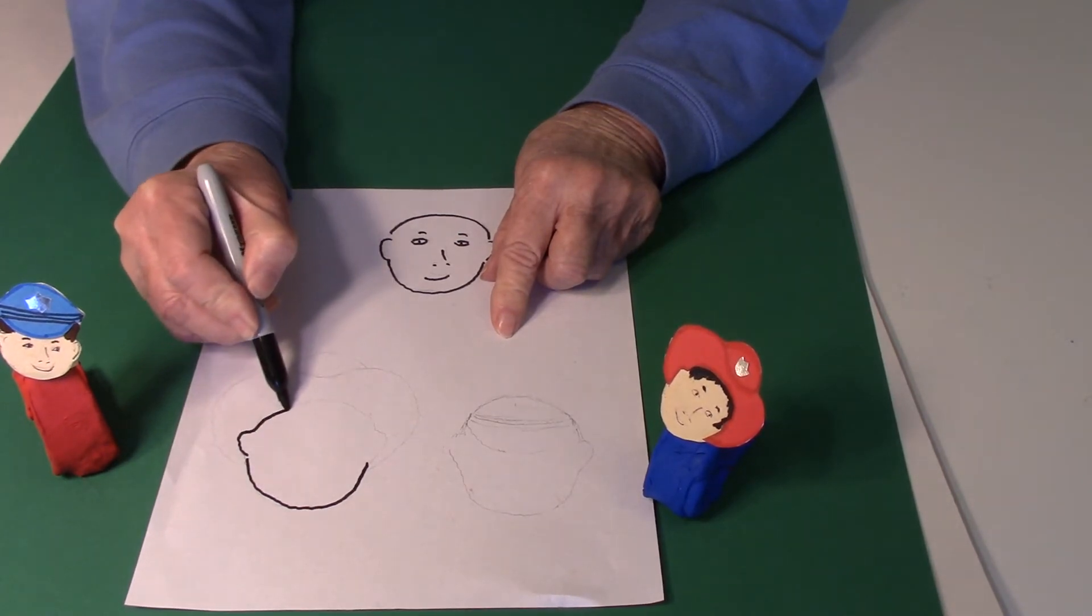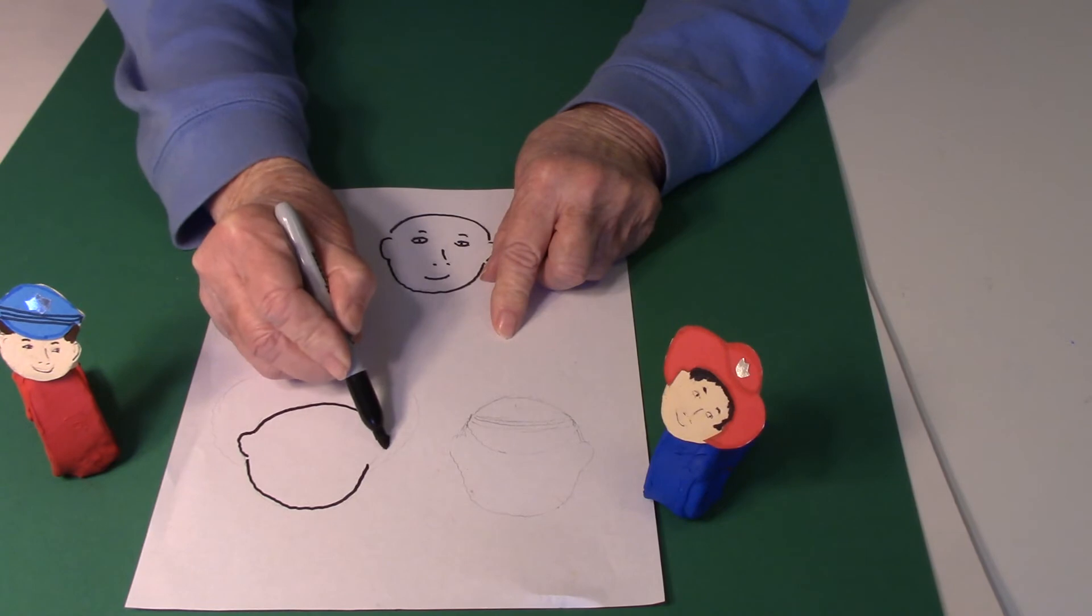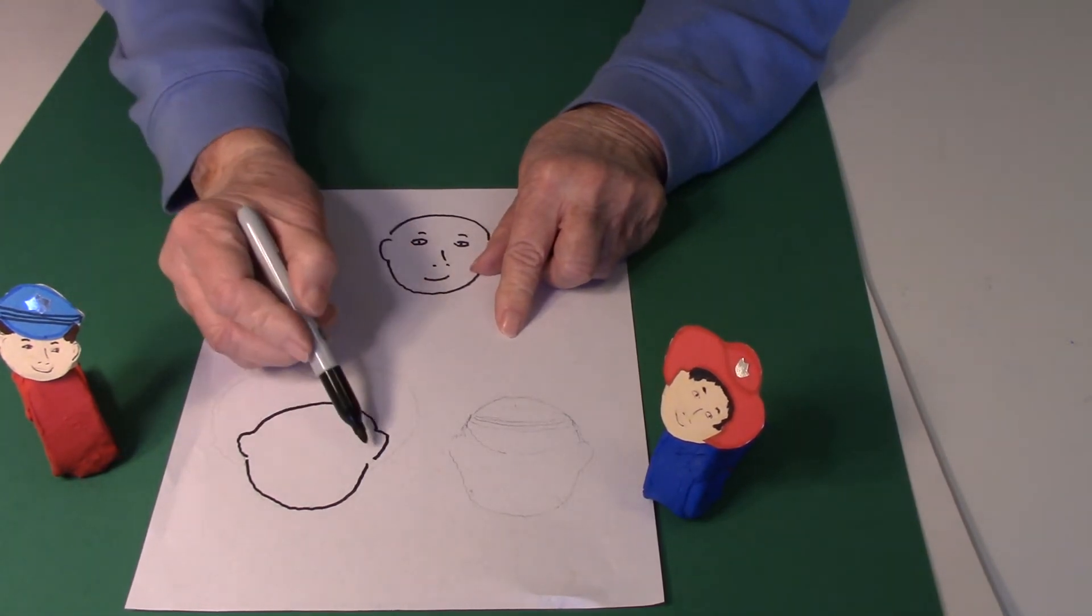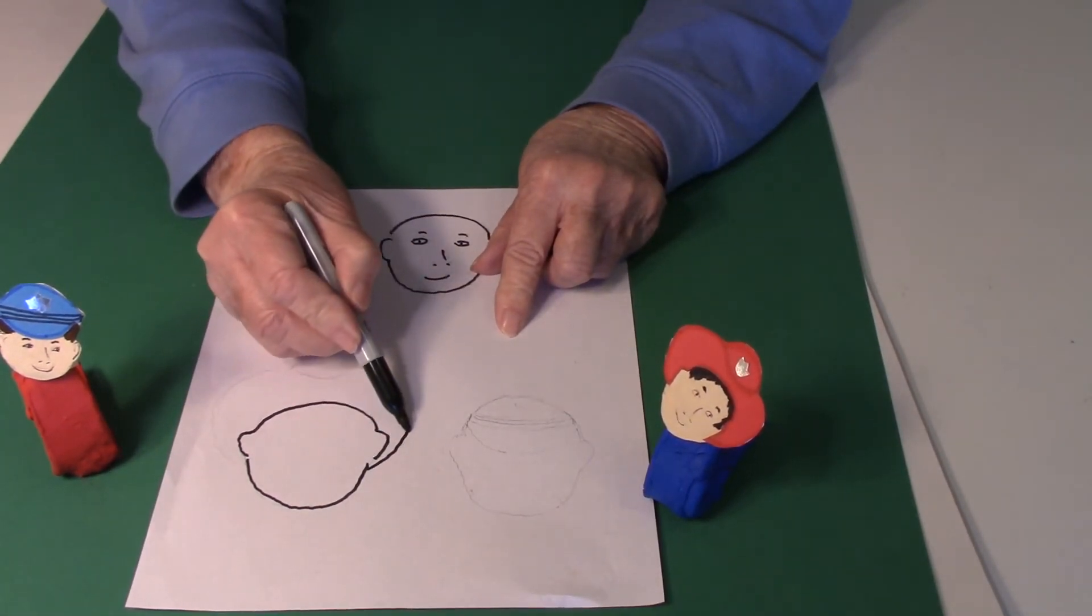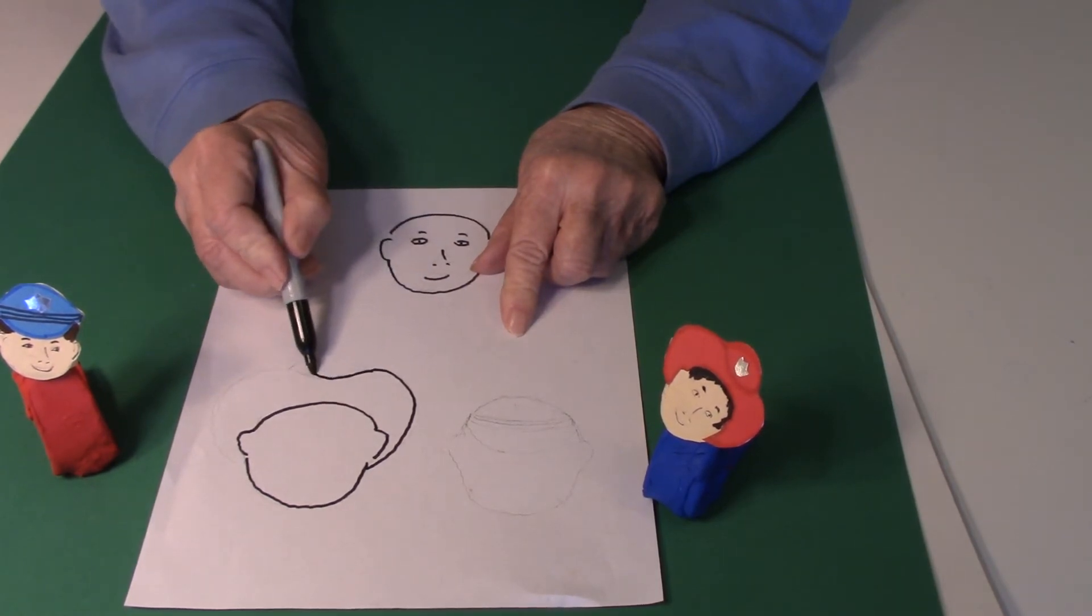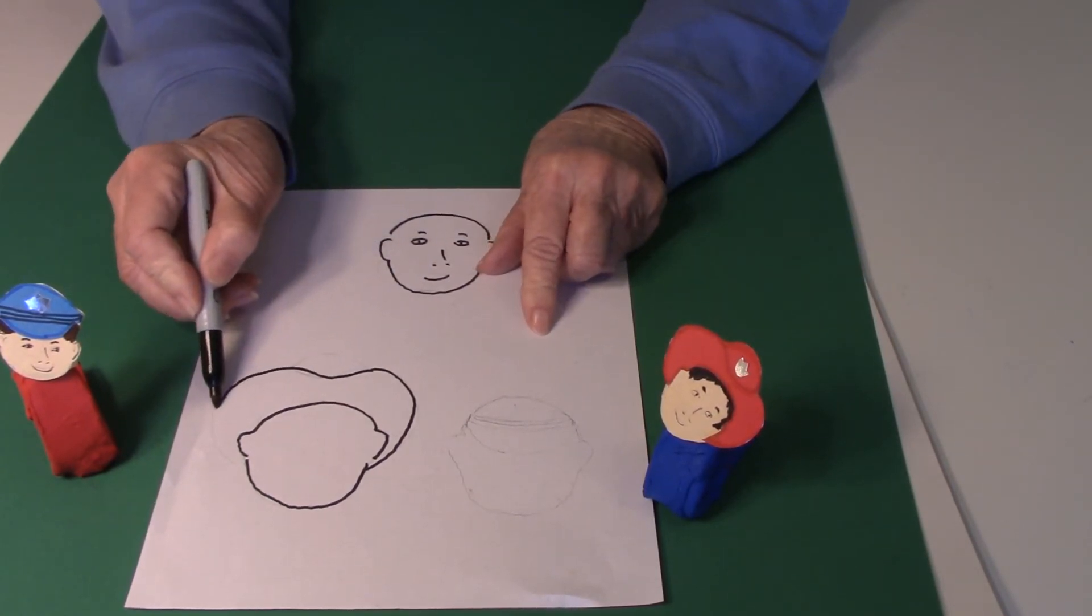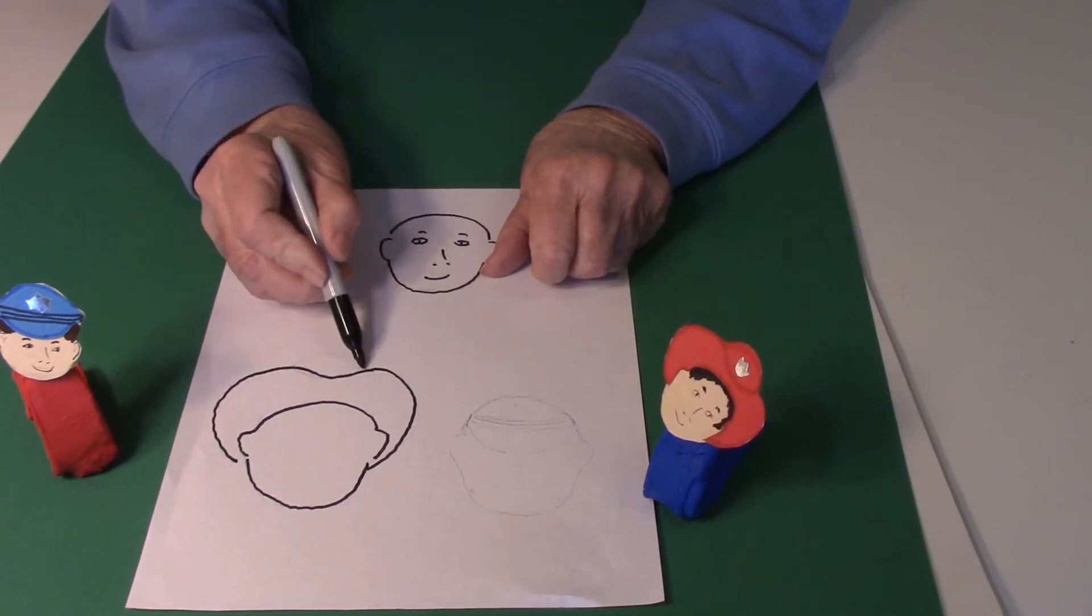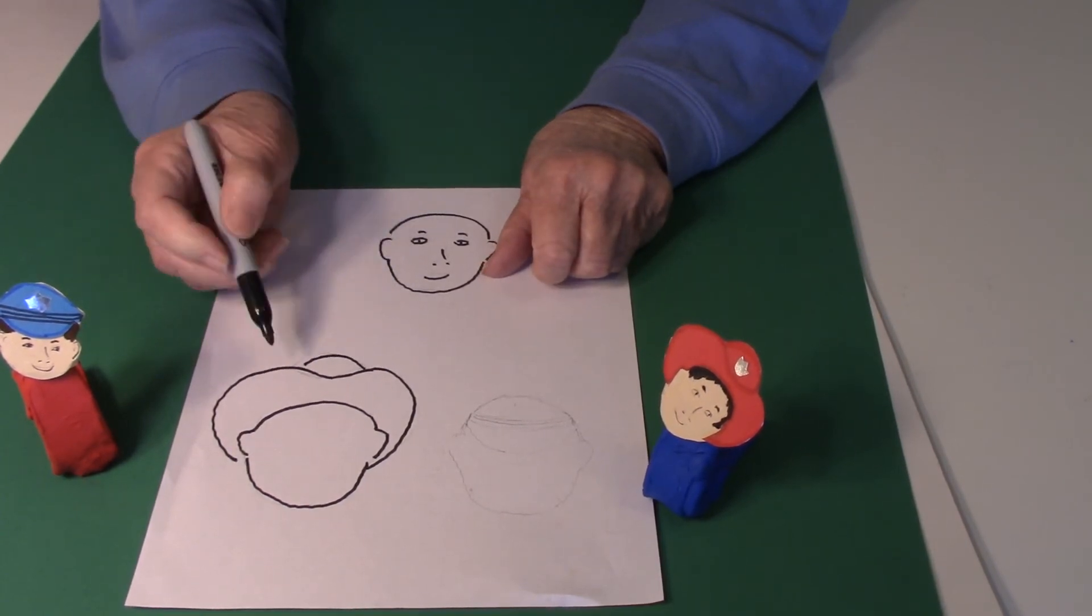I'll show you how I drew the fireman's hat, or the firefighter's, I'm sorry. A big circle around, and then a curve in, and then another big circle down and a circle for the top, and then you can add the little badge.